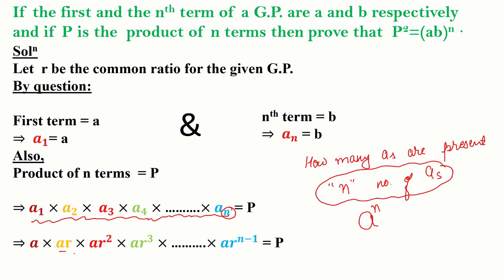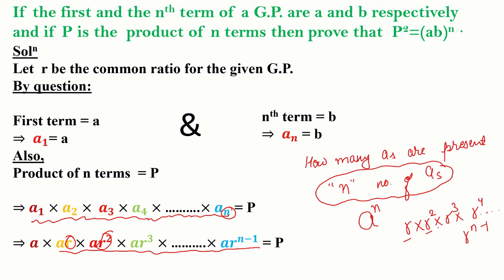Similarly, we have r terms: r, r², r³, r⁴, and so on till r^(n-1), all connected by multiplication. By the laws of exponents, when bases are the same, powers are added. So we write a single base r and add up all the powers: 1 + 2 + 3 + ... + (n-1).